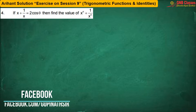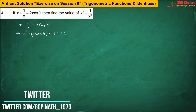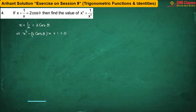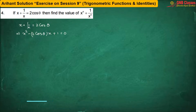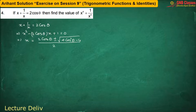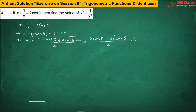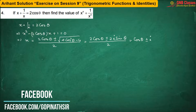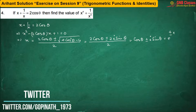Here we have been given that x + 1/x = 2cosθ. I am forming a quadratic equation in x: x² − 2cosθ·x + 1 = 0. By solving, we are going to get x = cosθ ± i·sinθ, which equals e^(±iθ).